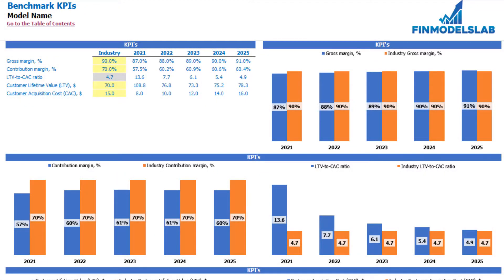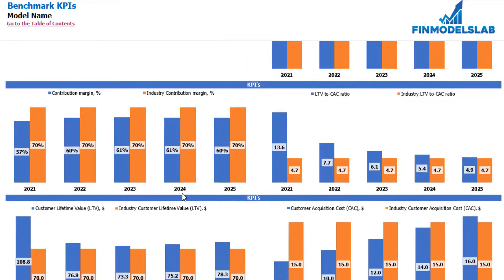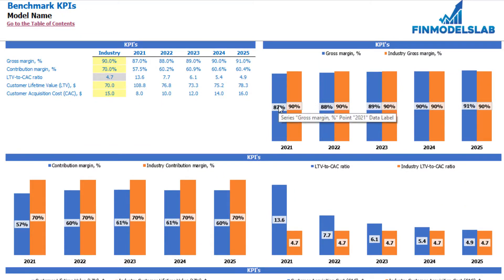On the benchmark KPI tab you may see industry benchmark KPIs and compare them with numbers generated by the model. The metrics include gross margin percentage, contribution margin percentage, LTV to CAC ratio, customer lifetime value, and customer acquisition cost. In the yellow cells you input your average industry benchmarks; in the white cells you see numbers calculated by the model based on your drivers. Charts show the industry-specific KPI in orange and the model-calculated value in blue.